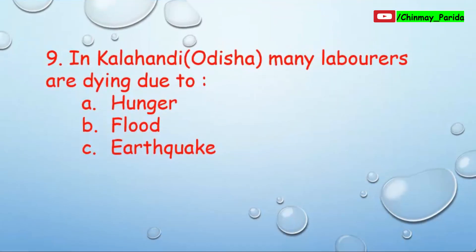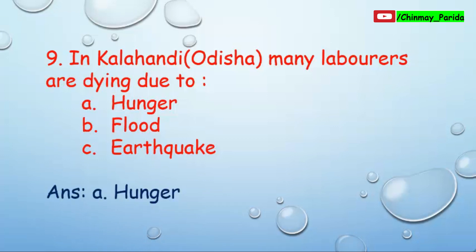Question number nine: In Kalahandi district of Odisha, many laborers are dying due to what? As studied in the lesson, laborers are denied proper nutrition in this backward district of Odisha, and many poor people die every year. The correct answer is Option A — hunger.